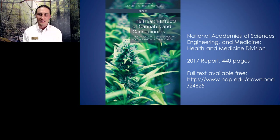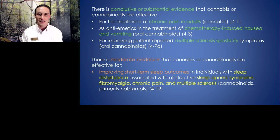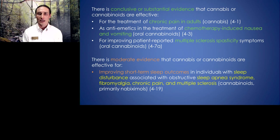A report from the National Academies of Sciences, Engineering and Medicine in 2017 did a comprehensive review of medical cannabis and adult-use cannabis. They found conclusive or substantial evidence that cannabis or its compounds are effective for treatment of chronic pain in adults, for chemotherapy-induced nausea and vomiting, and for improving multiple sclerosis spasticity as reported by patients. They also found moderate evidence that cannabis can improve sleep outcomes in people with sleep disturbance associated with various conditions — sleep apnea, fibromyalgia, chronic pain, and multiple sclerosis. This demonstrates that we already have good data that cannabis is an effective treatment for sleep disturbance.